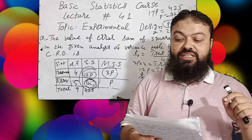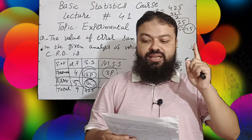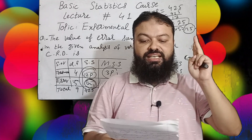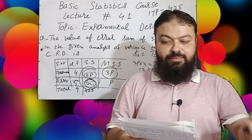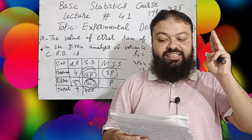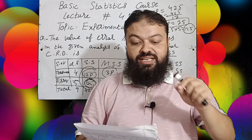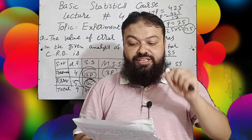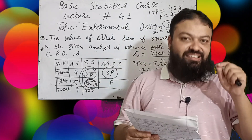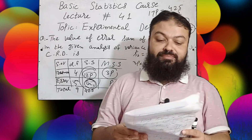Question number seven: Local control helps to — a) reduce the number of treatments, incorrect; b) increase the number of plots, incorrect; c) increase the error degrees of freedom, incorrect; d) reduce the error variance — yes, that is the correct option.